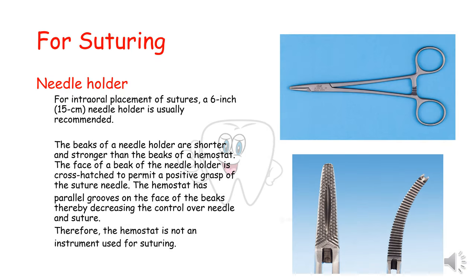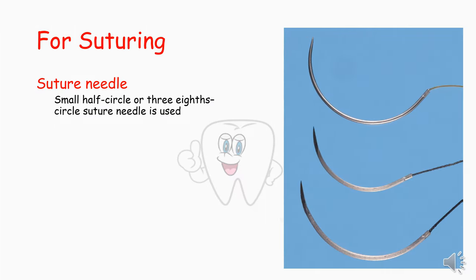For suturing, we use needle holders, sutures, and scissors. For intraoral placement of sutures, a 6-inch needle holder is usually recommended. The beaks of a needle holder are shorter and stronger than the beaks of a hemostat. The face of the beak of the needle holder is cross-hatched to permit a positive grasp of the suture needle. The hemostat has parallel grooves on the face of the beaks, decreasing control over the needle and suture — therefore, a hemostat is not an instrument used for suturing. Needles used for suturing are usually the small half-circle or 3/8-circle suture needle.